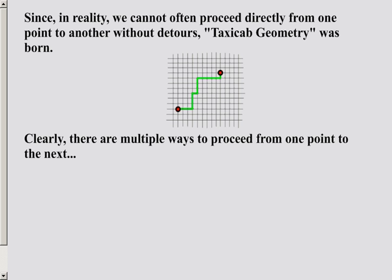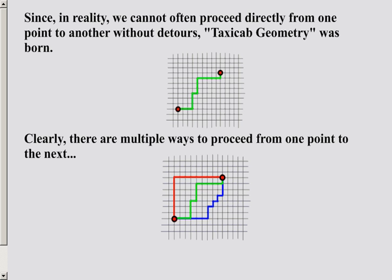Now clearly, with taxicab geometry, there are multiple ways to proceed from one point to the next. If we are simply moving along the grid with the idea that we want to get from one point to the other, and we do not deviate away from that idea, as long as we're proceeding from one point to another, there's several different ways to accomplish this destination.